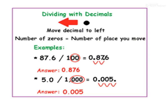First, 10, 100, 1000. 87.6 divided by 100. In multiply we move right. In divide we will move left. 100 means 2 places: 0.876. 5.0 divided by 10,000. How many places? 3 places. Then 0.005. Are you understand?